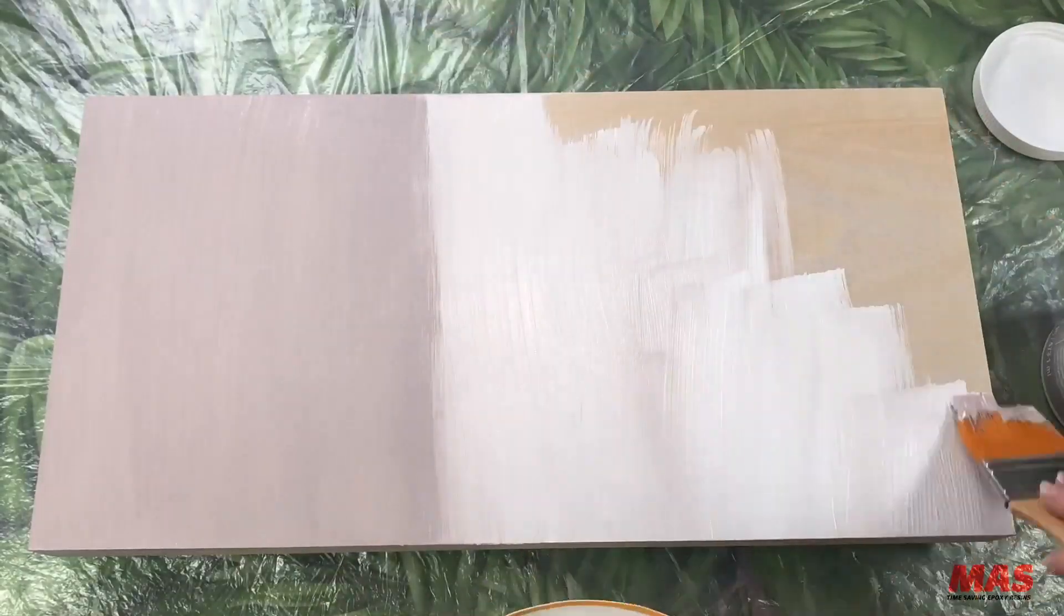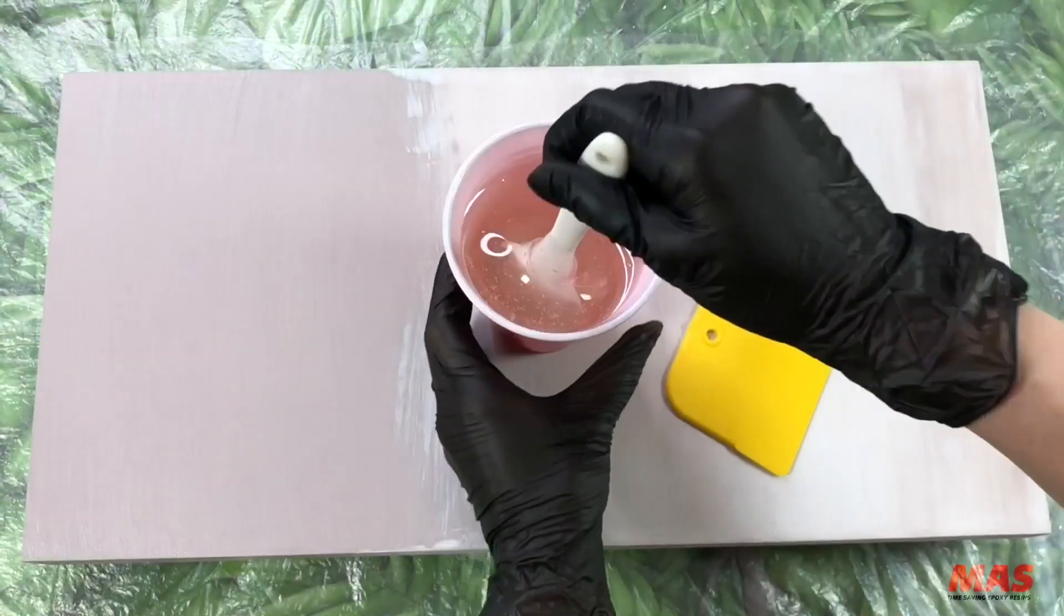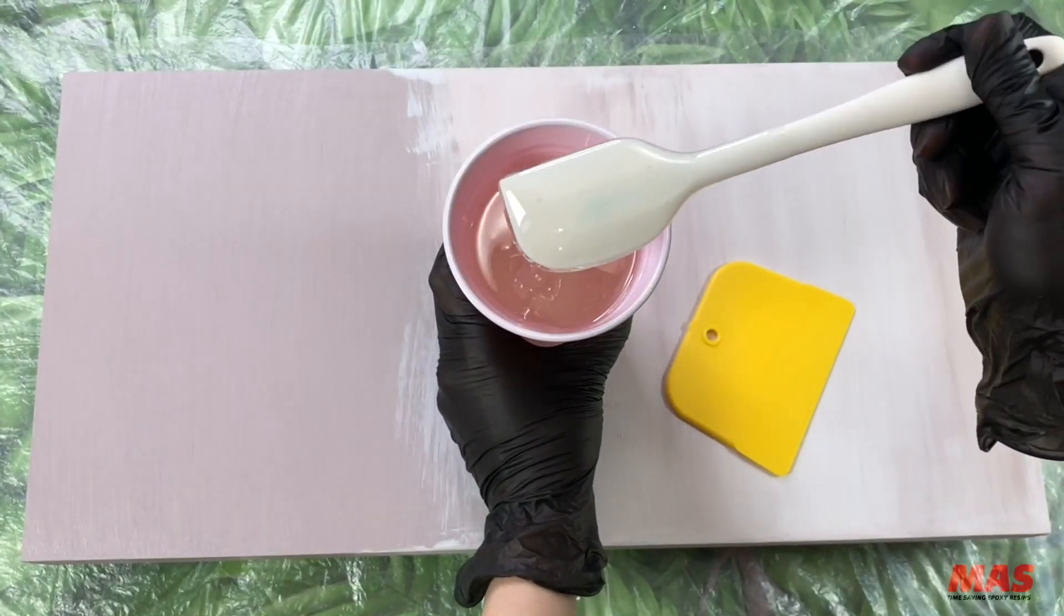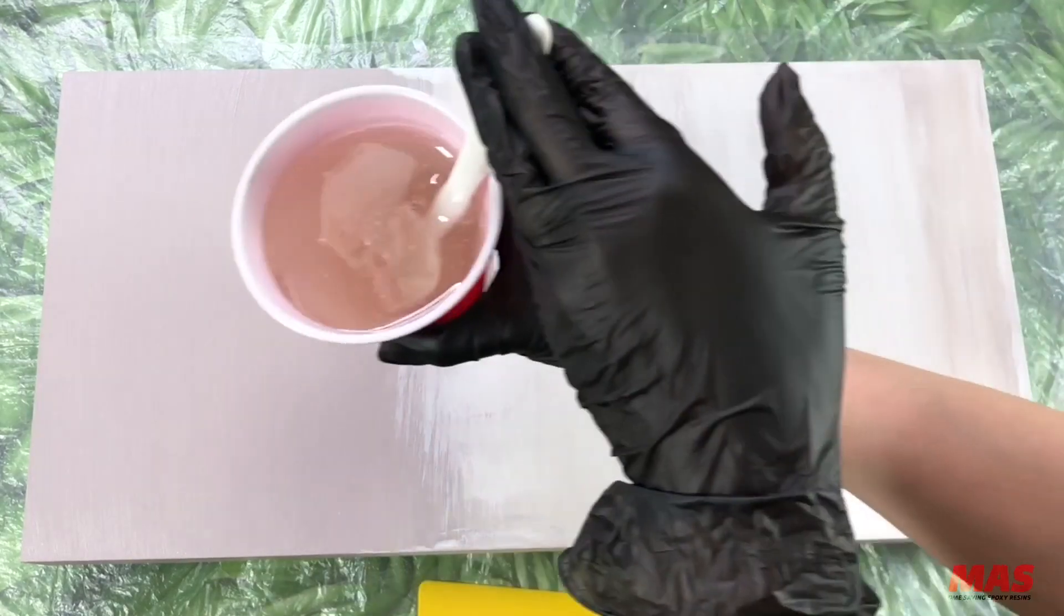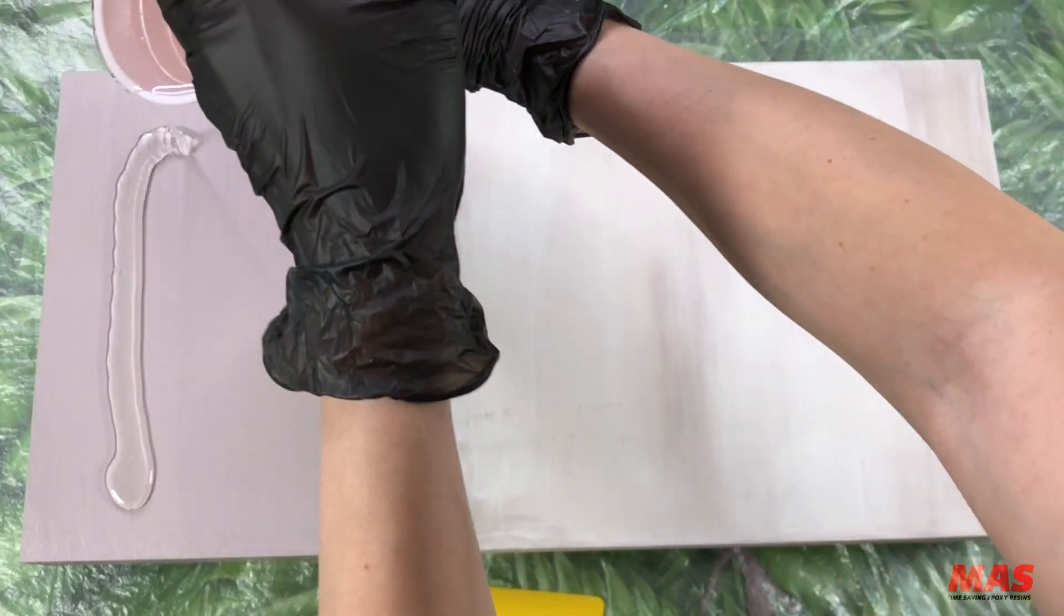I coated the right side of the panel with white gesso making sure to cover all of the exposed wood. Once your panel is completely dry add your flood coat.